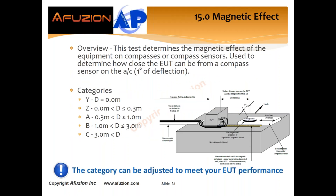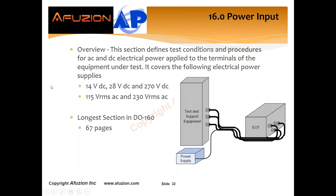Magnetic effect is a test to ensure the location of your EUT or line-replaceable unit. These categories are based on how close your equipment can come to compass sensors located on the aircraft, looking for a deflection of one degree in the compass. This is really more of a category than it is a test.